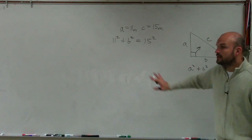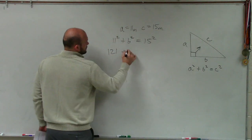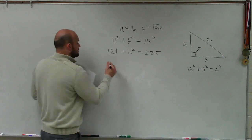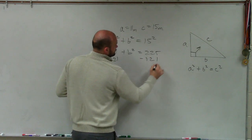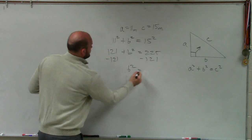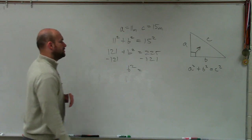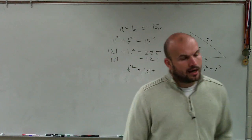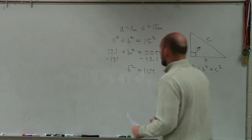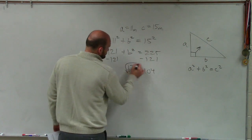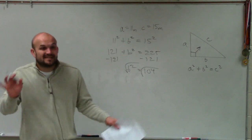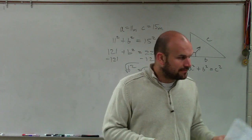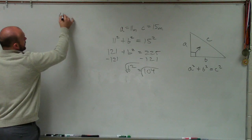So 11 squared is 121 plus B squared equals 225. All right? Now to solve for B squared, I subtract 121. And I have B squared equals about 104. Now, again, it says to use the square root or to leave it in radical form, which we'll go over a little bit more as well. So now I go ahead and take the square root.